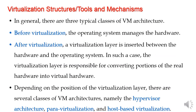In general there are three types of virtual machine architecture. Before virtualization, the operating system manages the hardware. After virtualization, the virtualization layer is inserted between the hardware and the OS. The virtualization layer is responsible for converting portions of the real hardware into virtual hardware. Depending upon the position of the virtualization layer, there are several classes of VM architecture: namely hypervisor architecture, para-virtualization, and host-based virtualization.